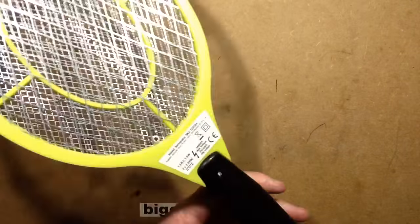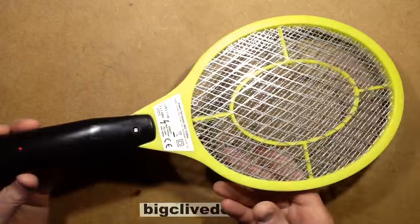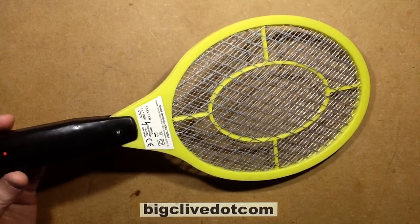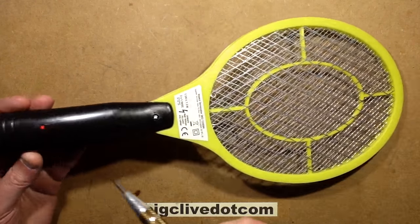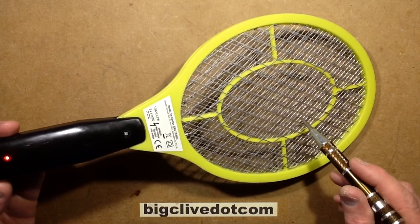An insect killing bat, the typical sort of thing. These are very common. This one came out of Poundland. It's basically got a button on the handle. When you push the button, a little red LED lights and applies high voltage across the metal grid.